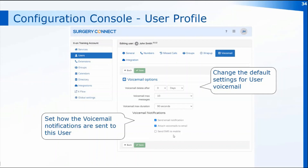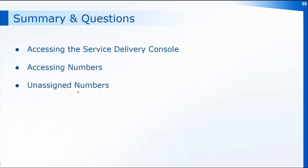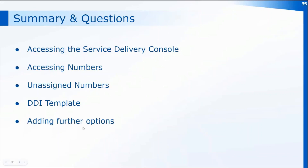When a voicemail message has been received, remember that you need to save any changes within the configuration console before they take effect. During this session we've looked at accessing the service delivery console, accessing the numbers section to find unassigned numbers and create a direct dial using the direct dial template, adding further options through the call flow in xflow, and how to change the default settings within the configuration console.